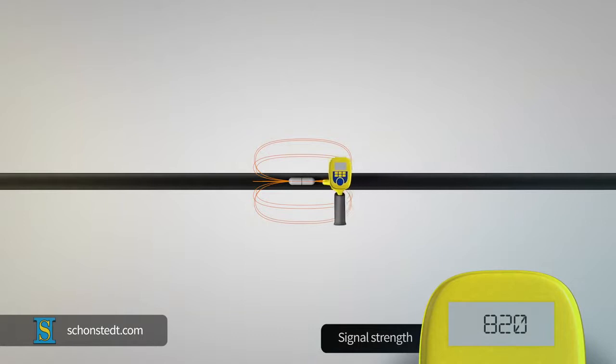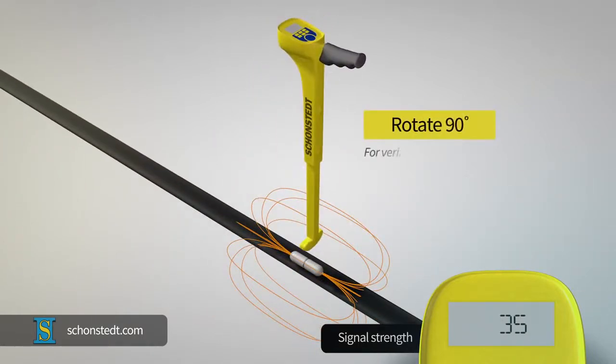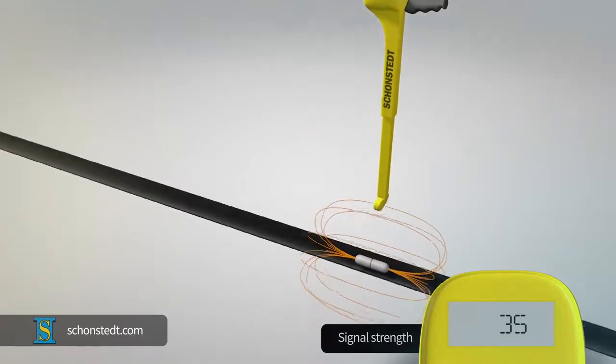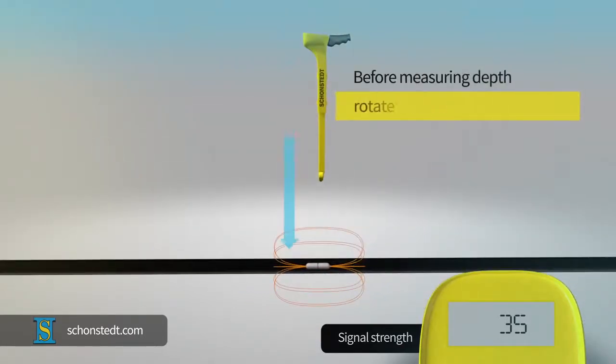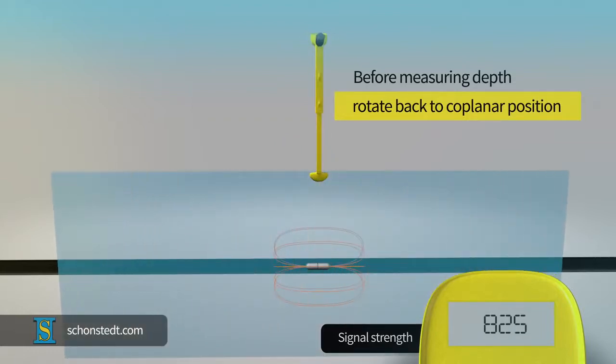You can move back to find the strongest signal and at that point rotate the receiver 90 degrees, verifying that the signal drops significantly to a null. At this time, you can attempt to measure the depth with the receiver, but you must remember to rotate the receiver back to a coplanar position when the signal is strongest before measuring the depth.